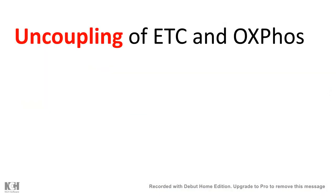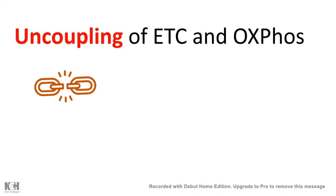In this video I'll talk about uncoupling of the electron transport chain and oxidative phosphorylation. Uncoupling literally means taking things apart. So let's look at what uncoupling means in the context of the electron transport chain and oxidative phosphorylation, and who does this.